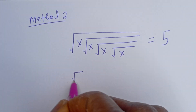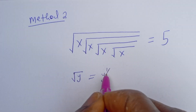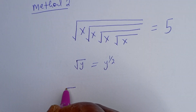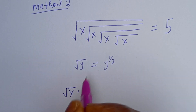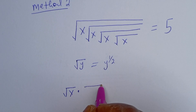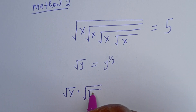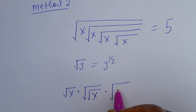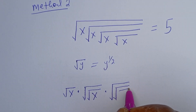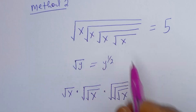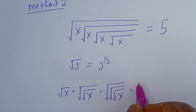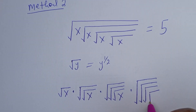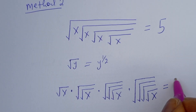Take note that the square root of y is simply y raised to the power of 1 over 2. Then the expression can be written as: the first square root of s, multiplied by the second square root of square root of s, multiplied by the third square root of square root of square root of s, multiplied by the fourth square root of square root of square root of square root of s, is equal to 5.